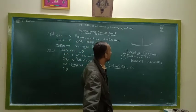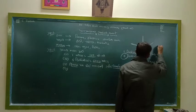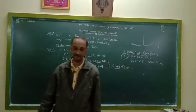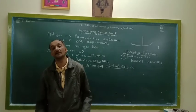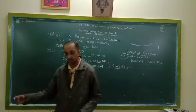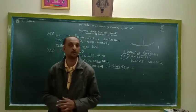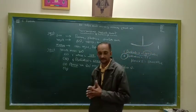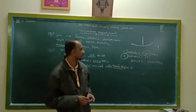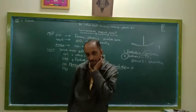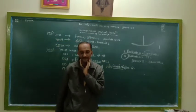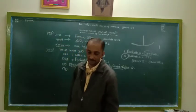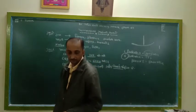સીવાઈ મશીનની અંદર સોઈ ઉપર-નીચે ખસ્તી હોય છે. સાઈકલનું પૈડું - આપણે સાઈકલ ચલાવીએ છે ત્યારે આખું ગોળ ફરતું હોય છે.